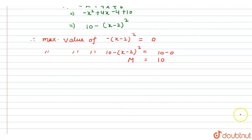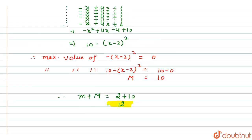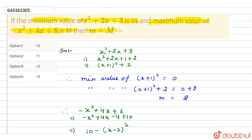Now we have to find the sum of minimum and maximum. Minimum m equals 2 and maximum M equals 10, so m plus M equals 2 plus 10, which is 12. Checking the options, option 3 is the right answer.